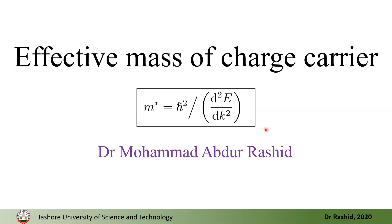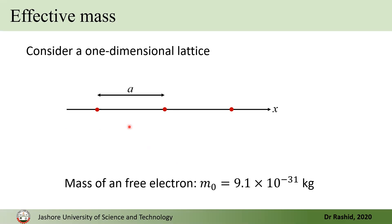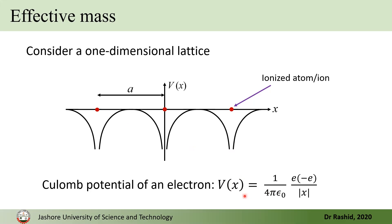Today we will derive an expression for this effective mass. To understand why the mass of the electron is different when moving in a lattice, let's assume a one-dimensional lattice where each atom contributes one electron, so the atoms become positive ions. As the electron moves freely within the boundary of the system, at different places it feels different kinds of potential. If we look at the shape of the Coulombic potential, when the electron is at the top of or close to an ion, the potential drops as 1/r, calculated with (1/4πε₀)(e/r).